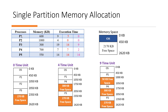The system has given processes P1 to P5 with the memory required by every process. P1 requires 600 KB, P2 requires 1000 KB, P3 requires 300 KB, P4 requires 700 KB, and P5 requires 550 KB. The execution time required: Process 1 is 9 units, Process 2 is 4 units, Process 3 is 19 units, Process 4 is 7 units, and Process 5 is 14 units.